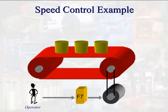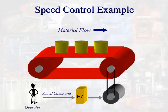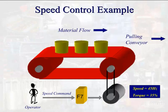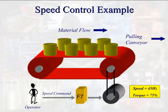To understand Torque Control, it's helpful to first look at a speed control example. The system shown is a simple conveyor moving some product. An operator will provide a speed command for the material flow. In response, the motor will pull the conveyor at the commanded speed. As more product is loaded onto the conveyor, the motor must develop more torque to meet the demand. Thus, the drive controls the motor speed by changing motor torque in response to the load.